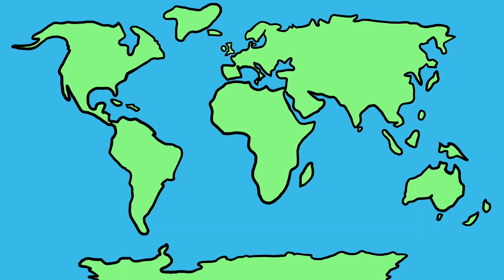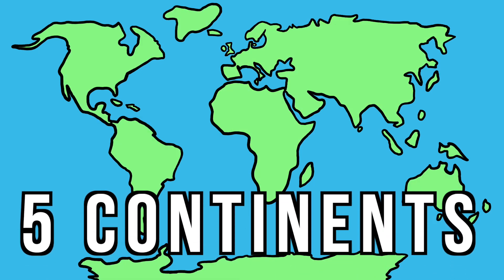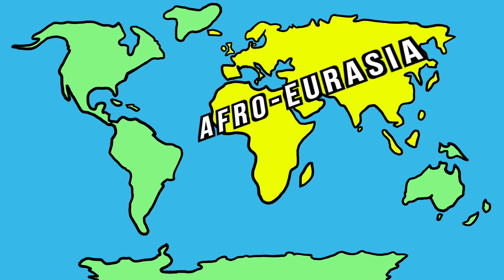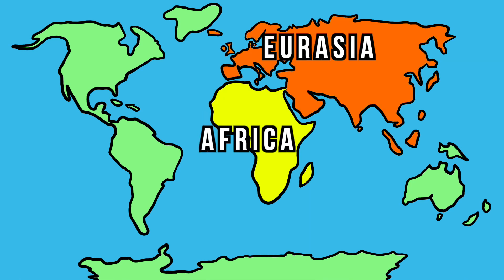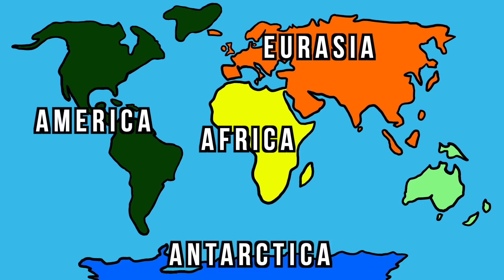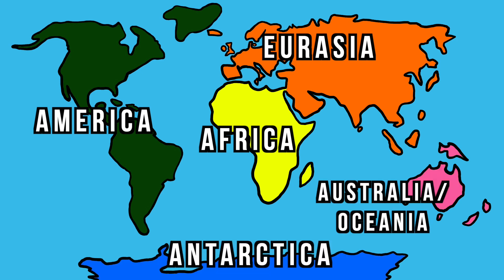But if you're not a fan of the four continent model, maybe the five continent model is for you. We take Afro-Eurasia and split it, giving us Africa and Eurasia. America stays the same, Antarctica stays the same, and so does Australia slash Oceania.